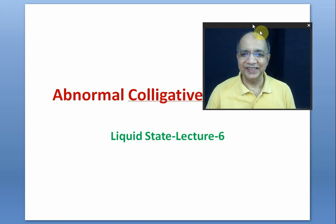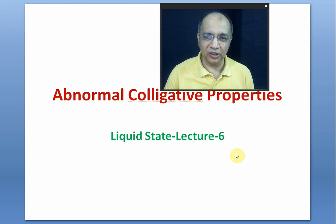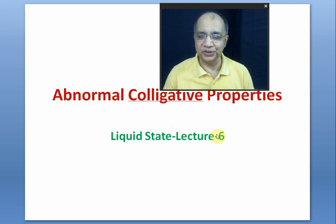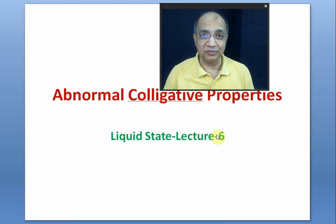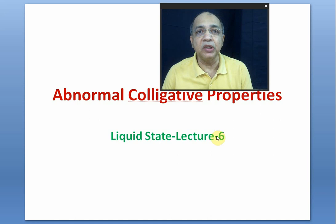Hi there. Let us take the sixth lecture on liquid state. In the last video we talked about normal colligative properties — all four: relative lowering of vapor pressure, elevation of boiling point, depression of freezing point, and osmotic pressure. Now let us take up abnormal colligative properties and see what is the difference between normal and abnormal.